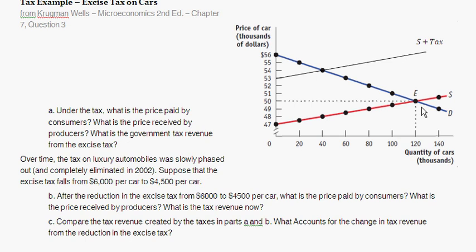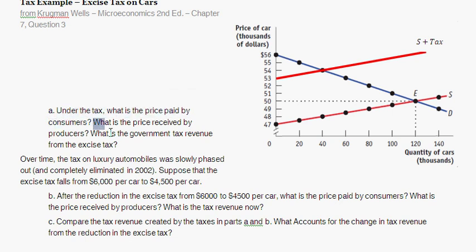What is the price paid by consumers? First, the pre-tax equilibrium is where quantity demanded equals quantity supplied — at $50,000 per luxury car with an equilibrium quantity of 120,000 cars. After introducing the tax, the new equilibrium is where the demand curve and the new shifted supply curve intersect, giving us $54,000 per luxury car. That is the price paid by consumers.